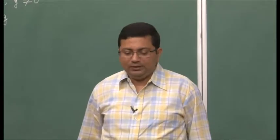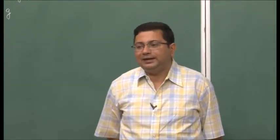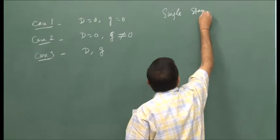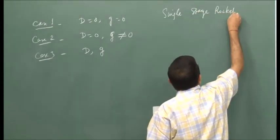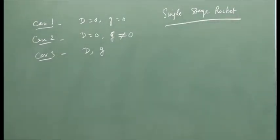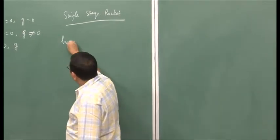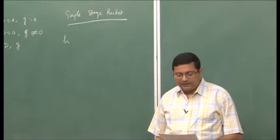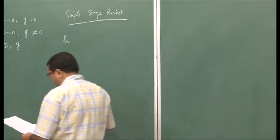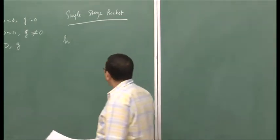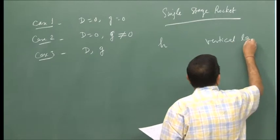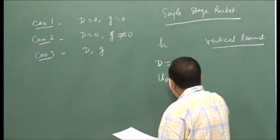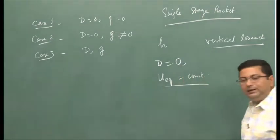Now let us continue our discussion on the vehicle dynamics for a single stage rocket. We want to calculate the height h to which a single stage rocket will rise if we neglect drag and assume that the effective exit velocity is constant. We are talking about a vertical launch, and we neglect drag while considering the equivalent exit velocity to be constant.